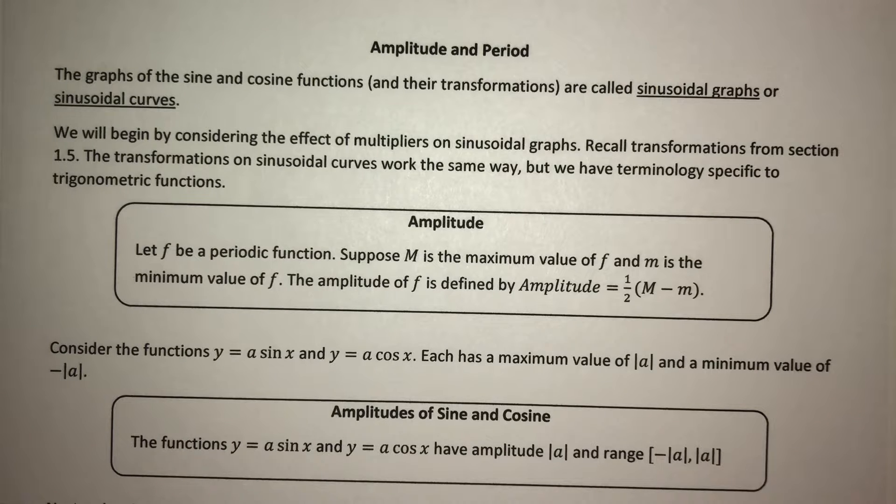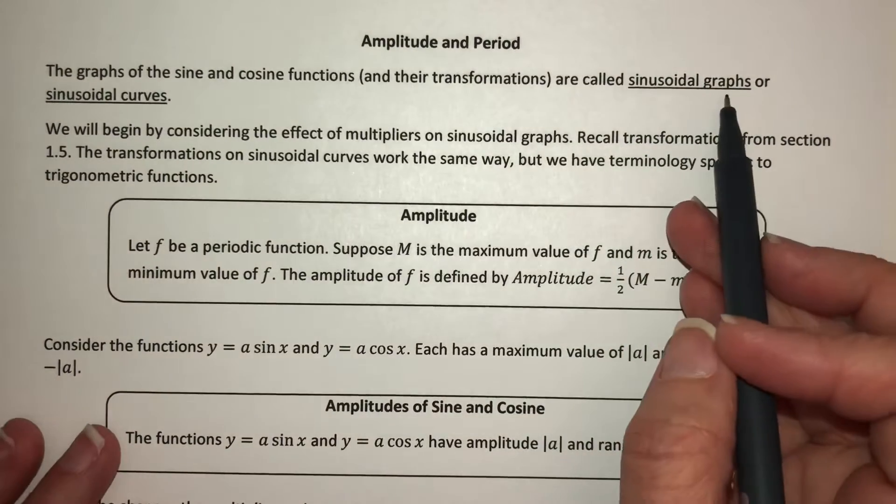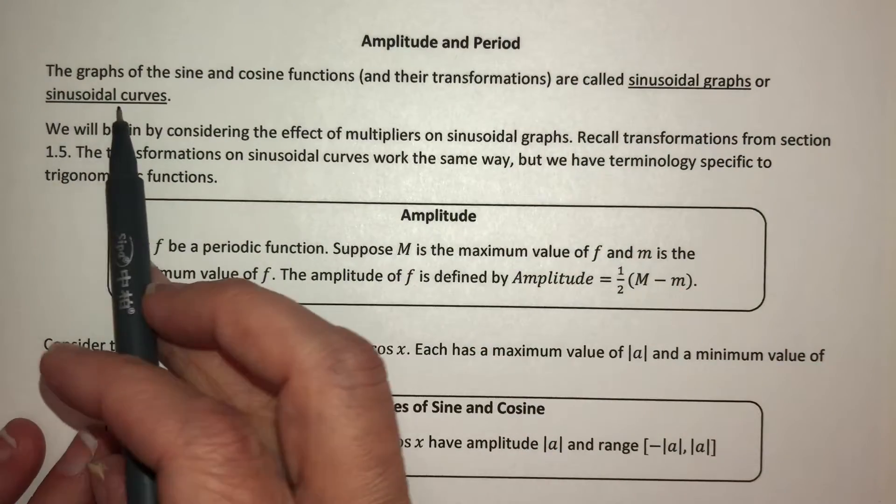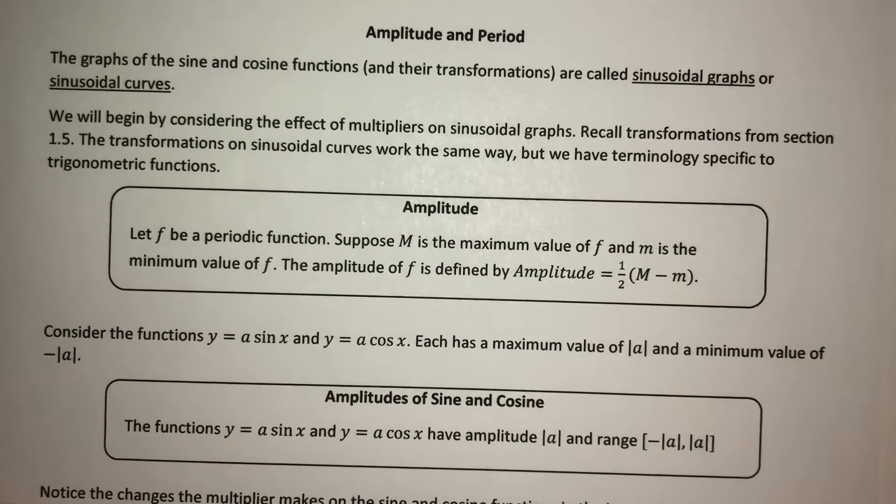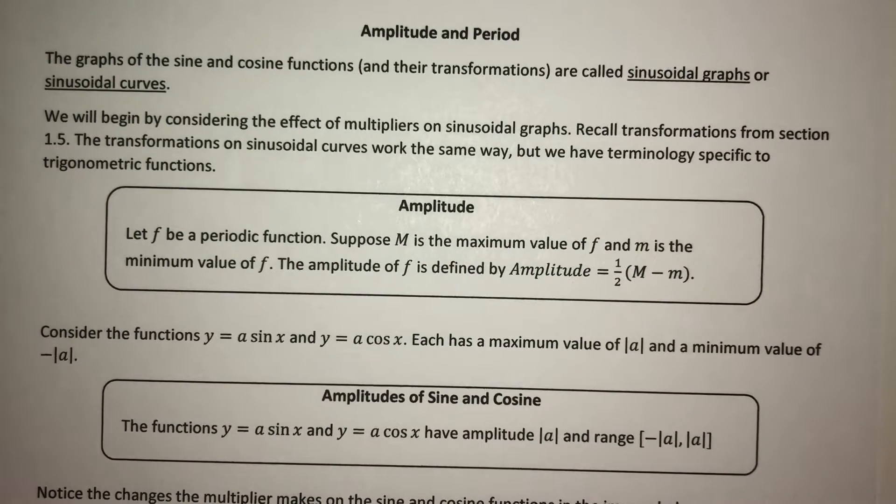This is part 3 of section 4.4. We've talked about the very basic graphs of sine and cosine. Now we're going to start transforming them. The graphs of sine and cosine and their transformations are called sinusoidal graphs or sinusoidal curves. Sine and cosine have the same basic shape going up and down in a nice smooth curve.